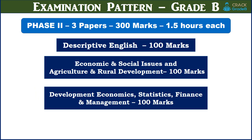In Grade B examination, you have one extra paper compared to Grade A. The three papers in Phase 2 are descriptive English, economic and social issues with agriculture and rural development, and development economics, statistics, finance and management. There are a total of 3 papers, each of 100 marks, and you would be given 1.5 hours for each paper. This is for Grade B examination.